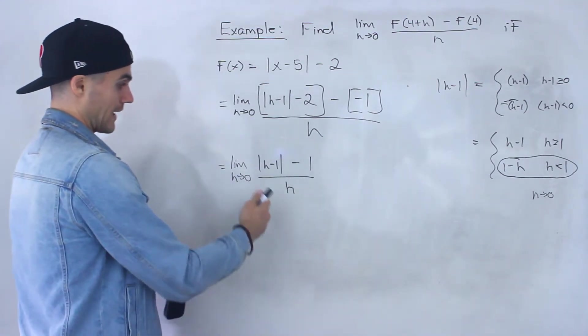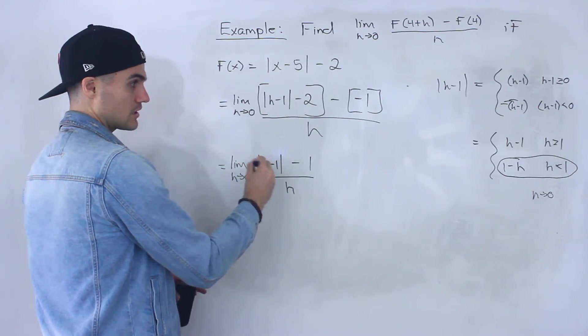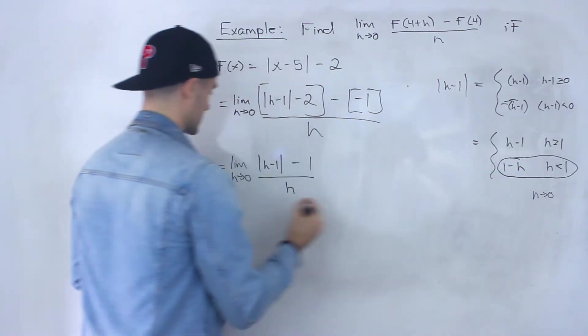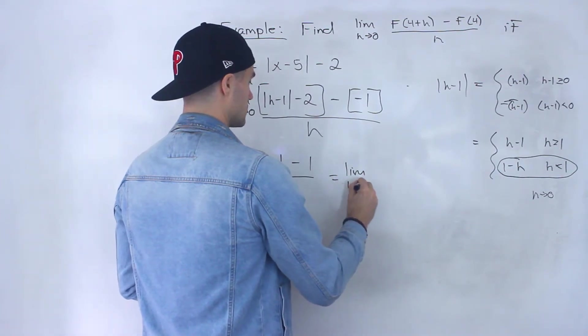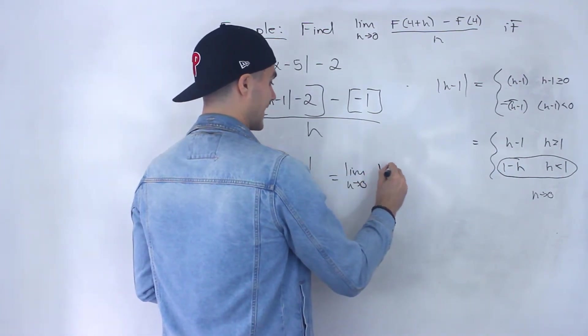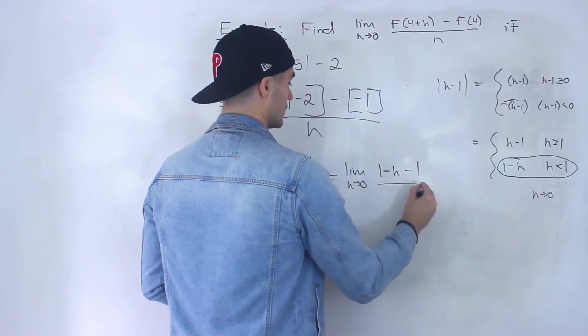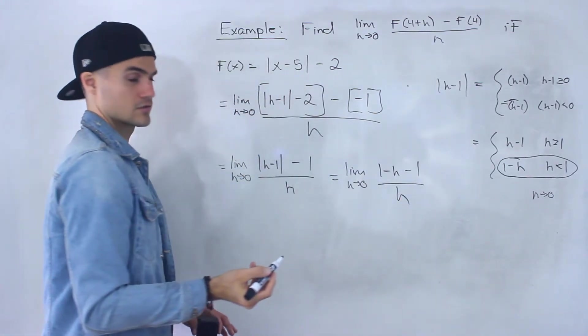And so as h approaches 0, basically this function here, we can rewrite as: the limit as h approaches 0 of (1-h-1) all over h, like that.